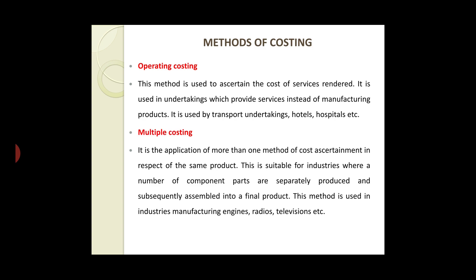Multiple costing is the application of more than one method of cost ascertaining for the same product. This is suitable for industries where a number of component parts are separately produced and subsequently assembled into a final product. It is used in industries manufacturing engines, radios, televisions, etc.